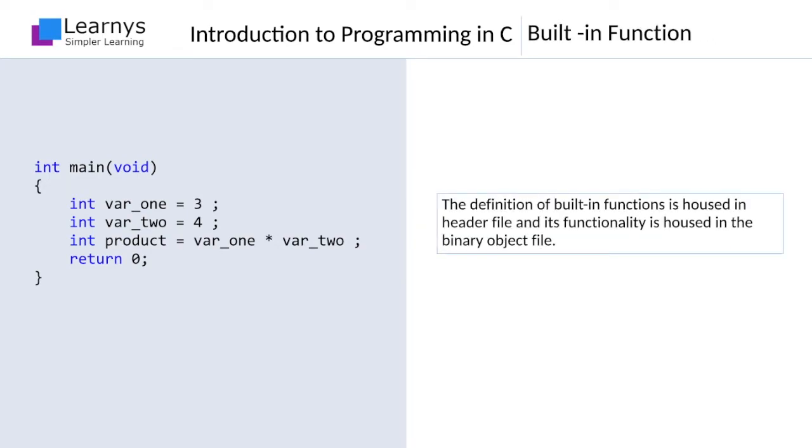The built-in functions, or the library functions, are usually split into two files. Their definition, which simply introduces the syntax of the function, is housed in header files. These files are ordinary text files with the extension .h. The actual functionality of the functions is housed in binary files, which are not human-readable.